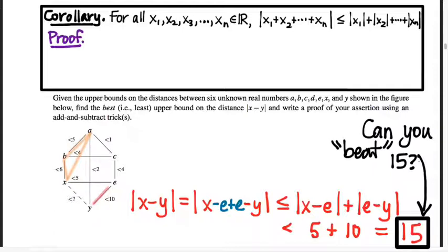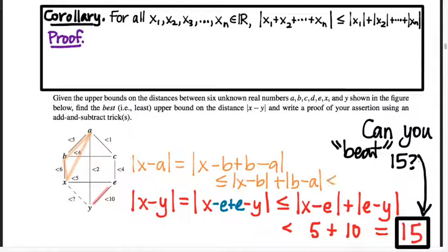So I might try and use this triangle, and if I use this triangle, I can find an upper bound on the distance from x to a by adding and subtracting: b minus b plus b minus a, split it apart—absolute value of x minus b plus absolute value of b minus a. x to b is less than 6, b to a is less than 5, and so x to a has to be less than 11.